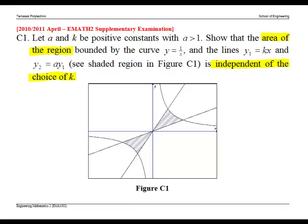First, let's label the lines. Y equals 1 over X is obviously a curve, so it cannot be the straight lines. So this curve is Y equals 1 over X.